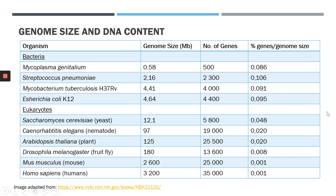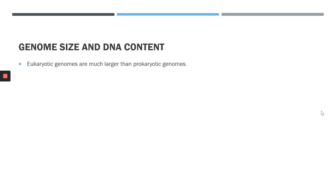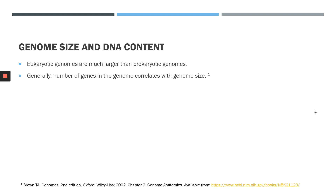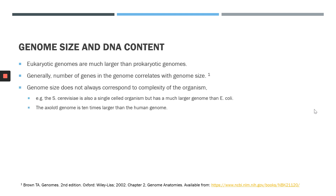Let's look into that in a little bit more detail. We've established that eukaryotes have much larger genomes than prokaryotes, and generally the number of genes in the genome does correlate with genome size. However, what's important to know is that the size of the genome does not always correspond to the complexity of the organism. For example, both Saccharomyces cerevisiae and E. coli are single-celled organisms, yet Saccharomyces cerevisiae has a much larger genome. Another example is the axolotl salamander — its genome is 10 times larger than the human genome, yet these organisms are much smaller than humans.